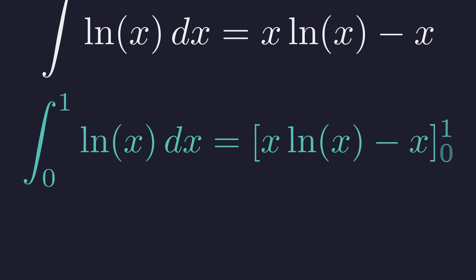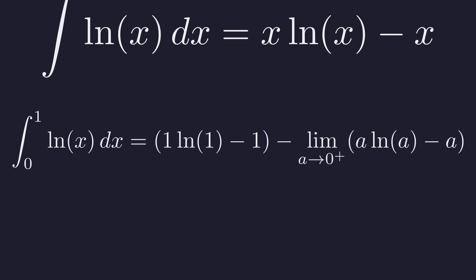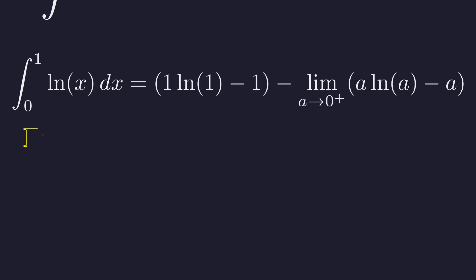Now we evaluate this from 0 to 1. This is an improper integral because the natural log of x is undefined at 0. We plug in the upper limit 1, and for the lower limit, we must take the limit as a variable a approaches 0 from the right. At x equals 1, the natural log of 1 is 0, so the first term evaluates to negative 1.